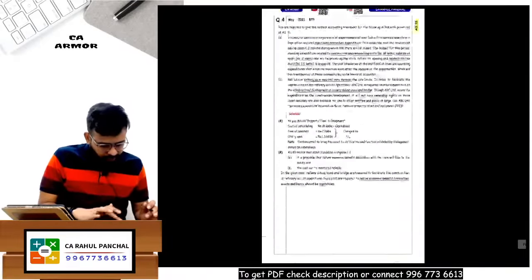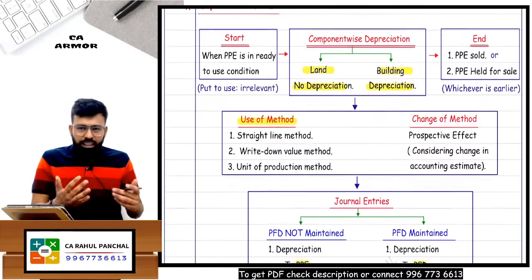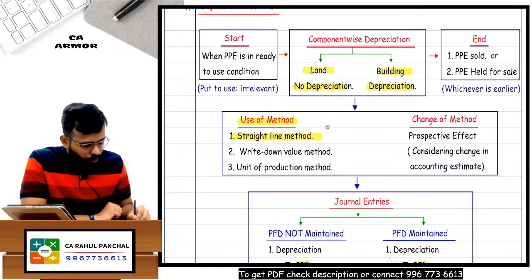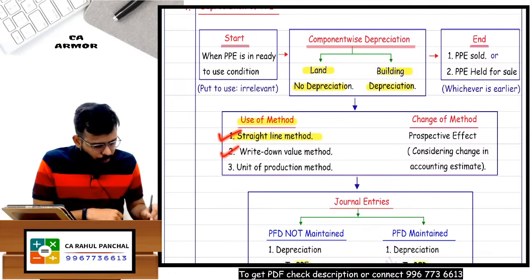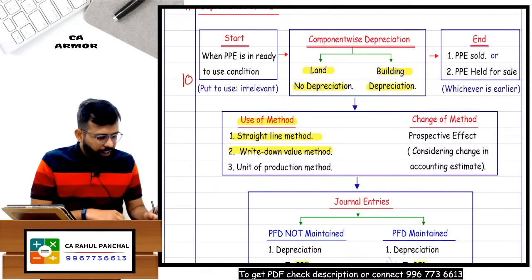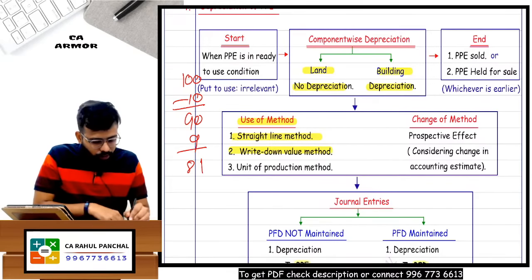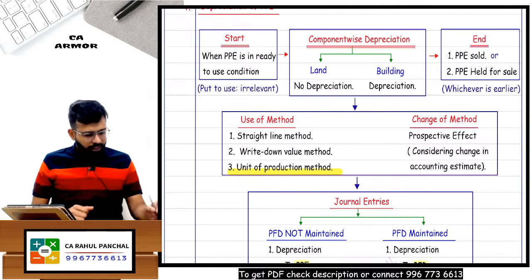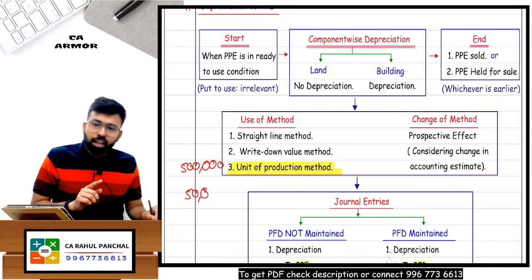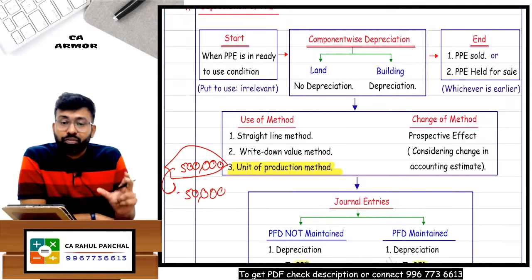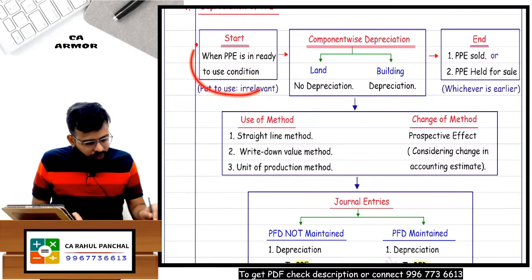Component-wise depreciation is explained. Now, what depreciation methods can be followed? Straight line method: cost minus scrap divided by estimated working life - you get the same depreciation every year. Written Down Value (WDV): you buy an asset for 100, apply 10%, get 90; on 90 apply 10%, get 9, then 81, and so on. Unit of production method: suppose you bought machinery for 5 lakh rupees and it will produce only 50,000 units - this 5 lakh depreciation is spread over 50,000 units. If you produce 100 units, that much depreciation is charged based on units.